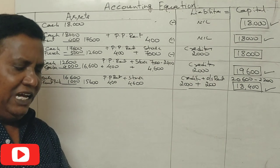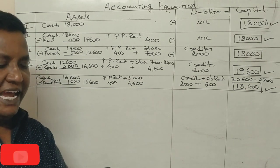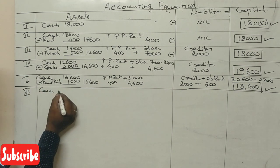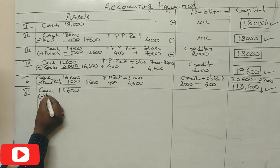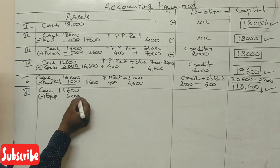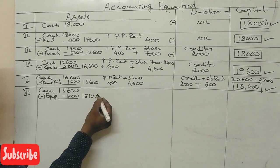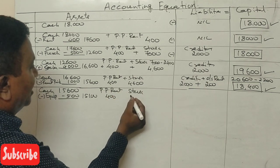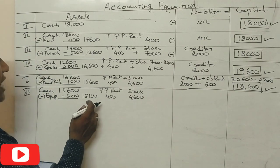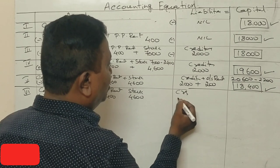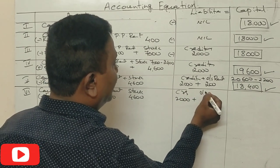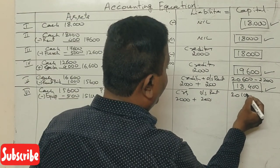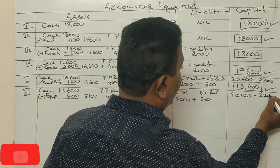Seventh transaction: purchase equipment for cash ₹500. Cash was ₹15,600, now equipment purchased for ₹500, so cash becomes ₹15,100. Prepaid rent ₹400, stock ₹4,600, equipment ₹500. Total assets ₹20,600. Creditors ₹2,000, outstanding rent ₹200 = liabilities ₹2,200. Capital ₹18,400.